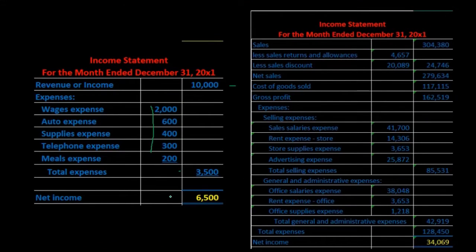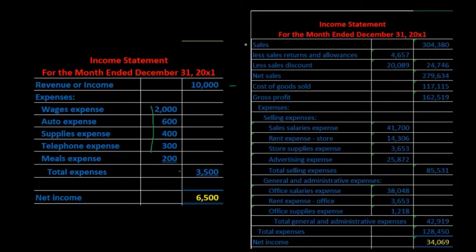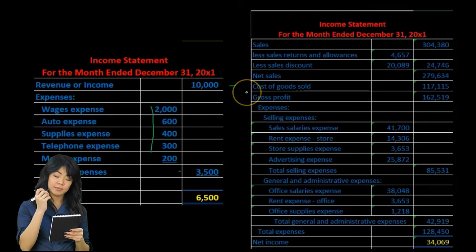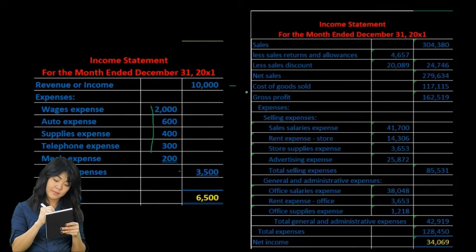A multi-step income statement still gets to that bottom line net income number, but now we have more steps. We have revenue less the contra revenue accounts — which are typically sales returns and allowances — giving us net sales. Then we take net sales and subtract cost of goods sold, giving us another subtotal on our way down to net income: gross profit.